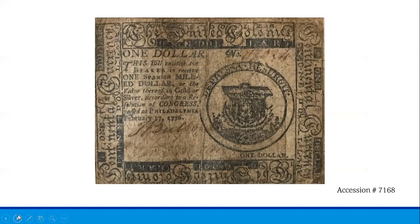It is during the American Revolution that we are introduced to continental currency. Recognizing the enormous cost associated with fighting a prolonged war, the Continental Congress knew something had to be done. On June 22, 1775, the Continental Congress voted to issue $2 million in bills of credit, which became known as continental currency, or simply continentals.